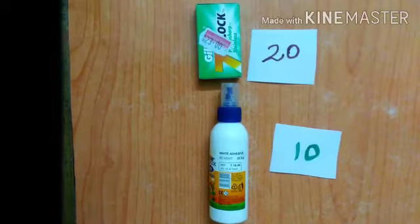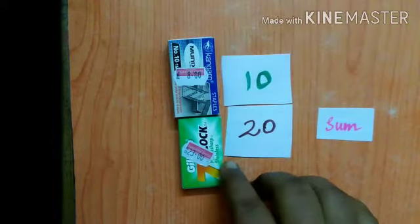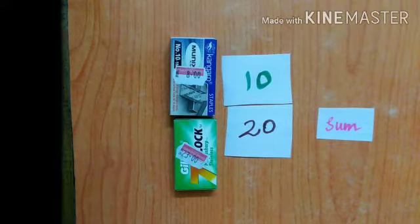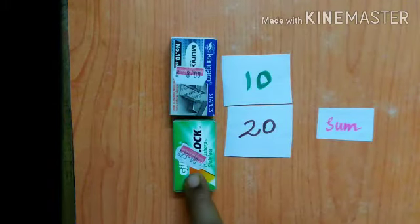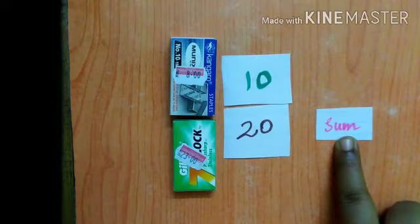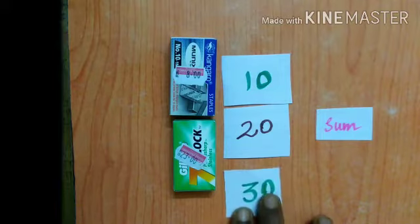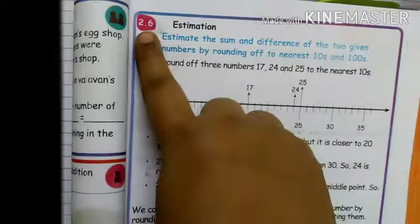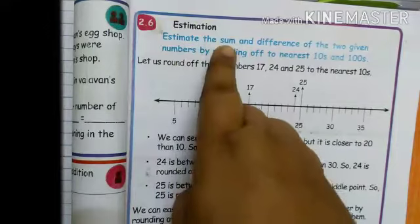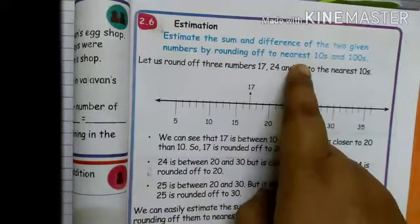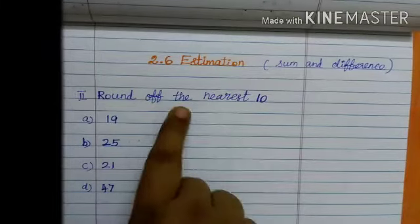This is estimation. Now we do the sum for estimation of sum and difference. The estimation amount for fevicol is 10 rupees and for the blade is 20 rupees. So you do the addition: 20 plus 10 equals 30. Number 2.6 — estimate the sum and difference of two given numbers by rounding to the nearest tens and hundreds. Round off to the nearest 10.